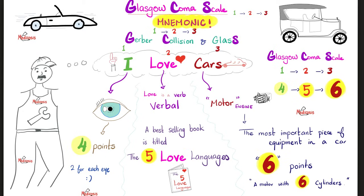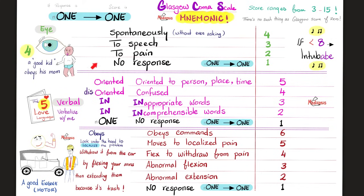For eye opening: think of it like a good kid who obeys his parents spontaneously without even being asked — that's 4 points. He only responds if you talk to him — that's 3 points. Response only to pain is 2. No response whatsoever gives you 1. When the response is none, the score is 1.